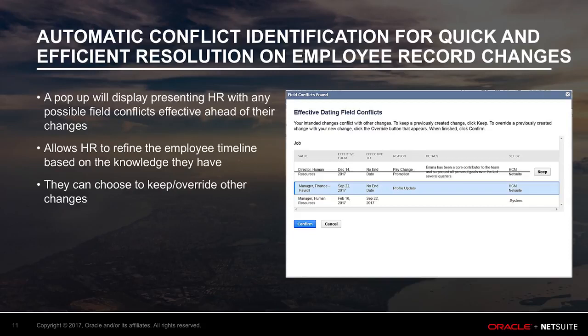They can proactively enter this change today and have the changes effective when the date arrives. The new Field Conflict Resolution for Effective Date Employee Changes functionality, in the 18-1 release, introduces a pop-up feature to alert the HR user if an effective-dated field change they made on an employee record has conflicts with a future date of the field. From this pop-up, HR can be made aware of any conflicts and resolve them before submitting their changes, helping HR team members better manage an employee's timeline of changes.